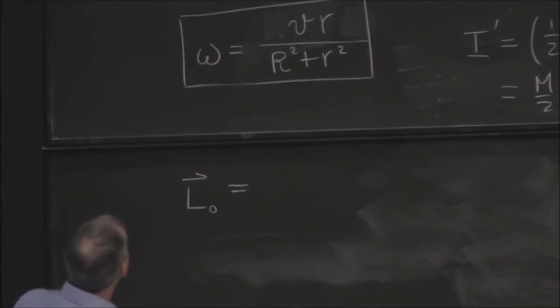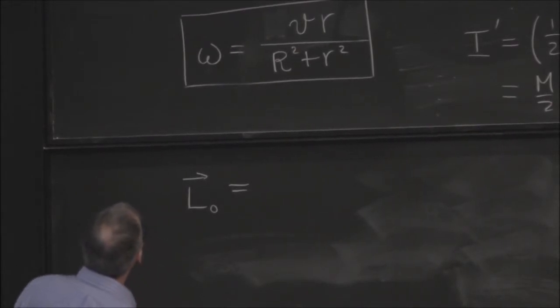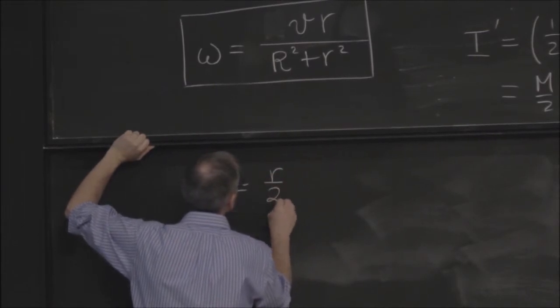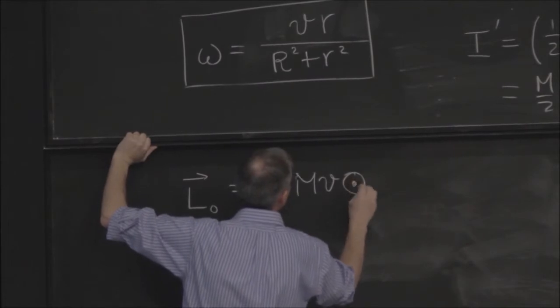Right, so we're now using the center of mass, and so it should be out, right? So we have r over 2 perpendicular distance times mv, and it's coming up.